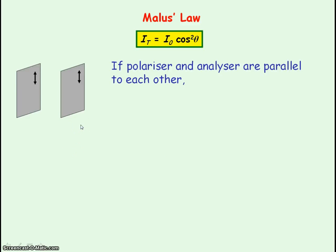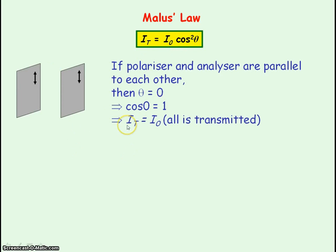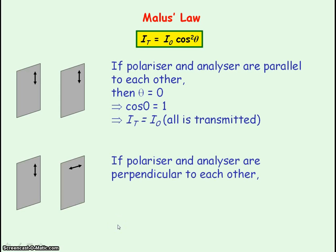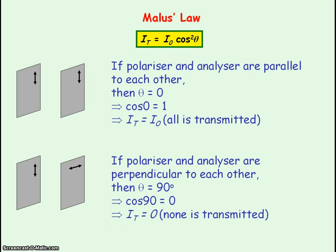If the analyser and polariser are parallel to each other, theta is 0 and cos 0 equals 1, so the transmitted intensity through the analyser equals the incident intensity of the polarised wave — all the light is transmitted. When the polariser and analyser are crossed — perpendicular to each other — theta is 90 degrees, cos 90° is 0, so the transmitted light through the analyser is zero.